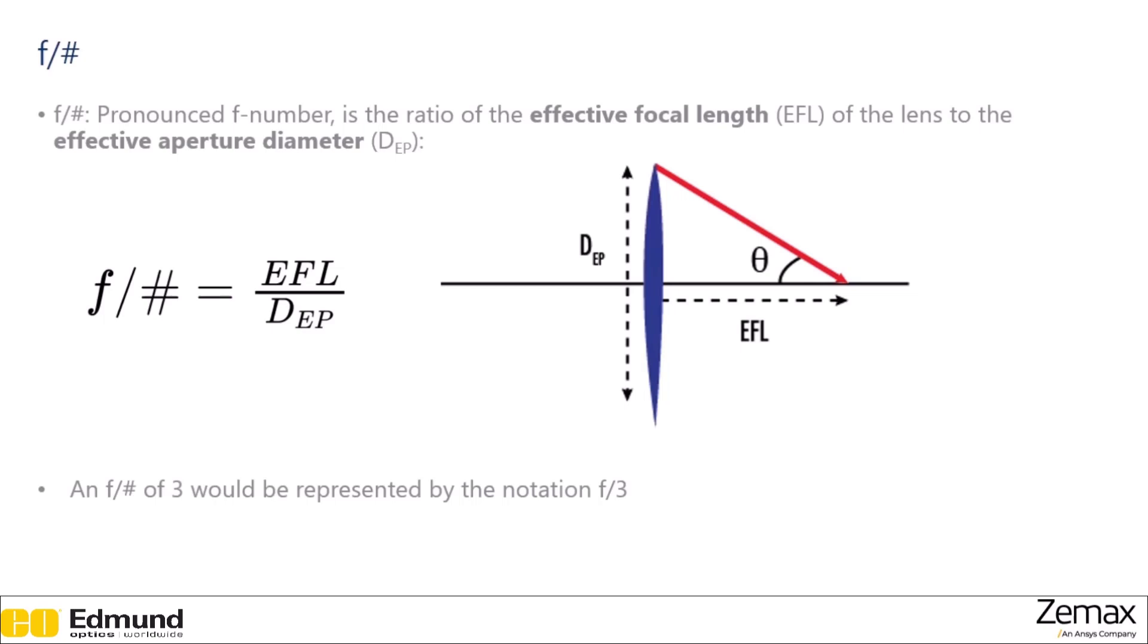F number, pronounced F number and written as F backslash pound sign or number sign, is the ratio of the effective focal length of the lens to the effective aperture diameter. Essentially it's a measure of how much light is allowed through the system. So if you have any larger aperture, you have a smaller F number. And if you have a smaller aperture, letting less light through, you have a larger F number. And the F number of three, for example, would be represented with the notation F backslash three.